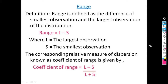Range is used in a number of fields where data have less variation. For example, range is useful in the stock market to know fluctuations, or in weather forecasting to know the limits within which the temperature is likely to vary on a particular day.